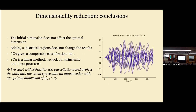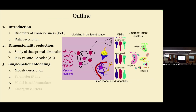To summarize the dimensionality reduction section: initial parcellation does not affect the optimal dimension; adding subcortical regions does not improve anything; we achieve good classification with PCA. However, since all the processes we're studying are intrinsically nonlinear, we decided to keep the autoencoder. Going forward, we use the Schaefer 100-region parcellation and project all data into a 15-dimensional latent space with an autoencoder, then proceed to modeling.